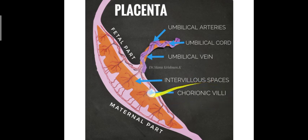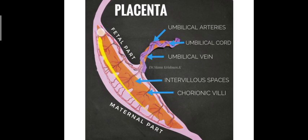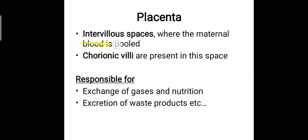The chorionic villi lie inside the intervillous spaces where the maternal blood is pooled. The placenta has a maternal part and a fetal part, and it is connected to the umbilical cord, which connects to the umbilicus of the fetus. The chorionic villi are responsible for the exchange of gases, nutrition, and metabolic waste products from the fetal blood.